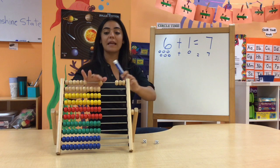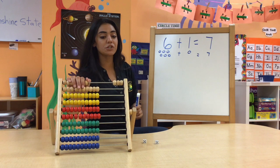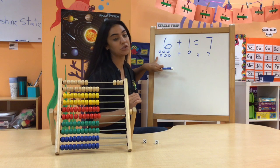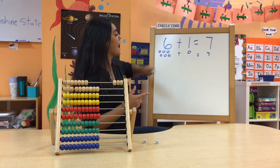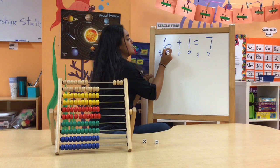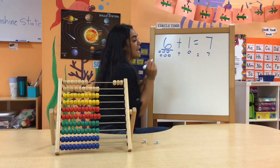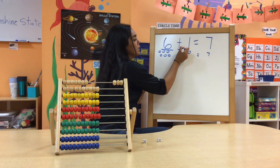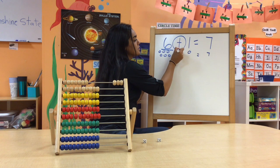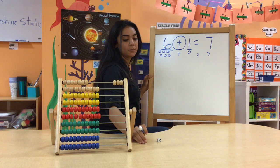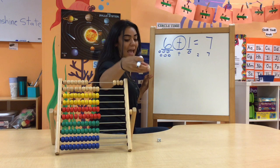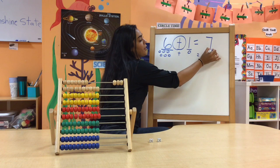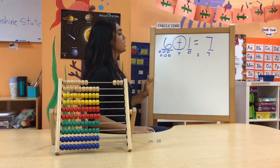We can double check our work by counting out the counters that we drew and making sure that our addition sentence has the first add-in that we rolled — six — plus one more, which is the second add-in that we rolled — equals our answer seven all together.